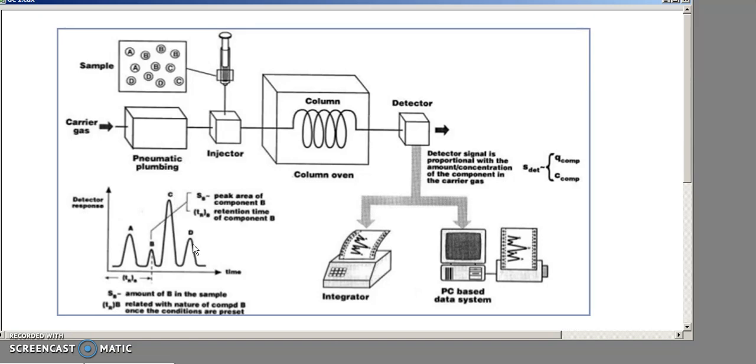The output we get looks something like this, where there is a peak corresponding to each product. The lower boiling compounds come out earlier, so in this case A is the lowest boiling compound. In this case D is the highest boiling compound because it comes out last.